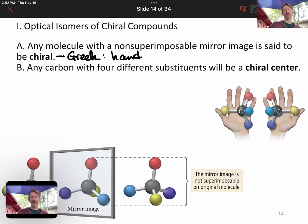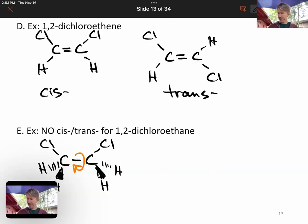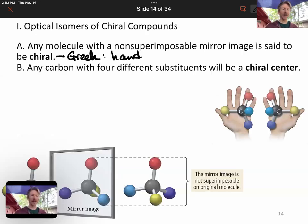Hands are chiral, meaning that they are non-superimposable mirror images. If I try to overlay one hand on another, they are not the same. Their fronts and backs are different. As far as we're concerned, any carbon with four different substituents or four different things attached to it will be a chiral center.